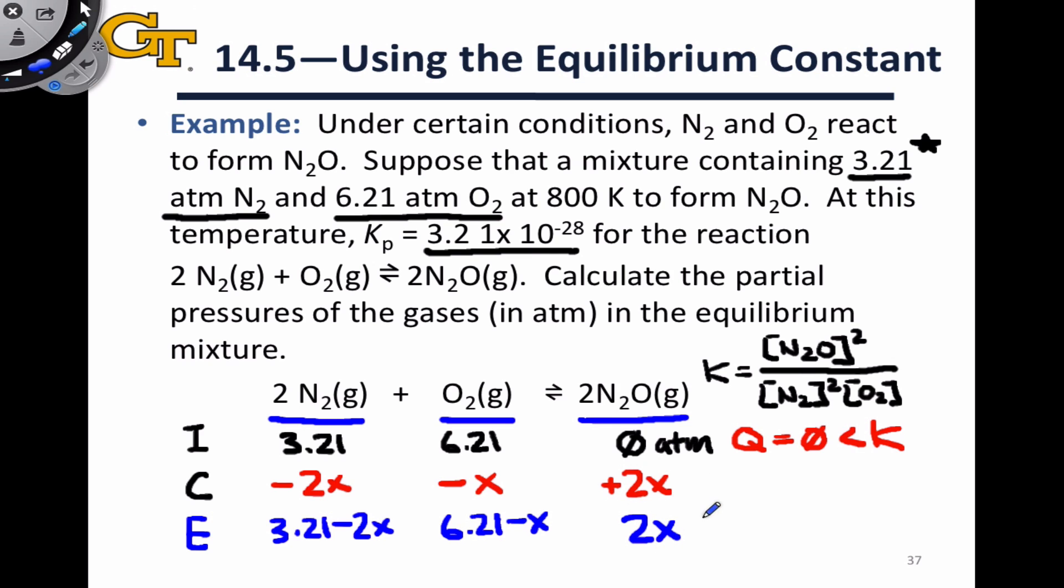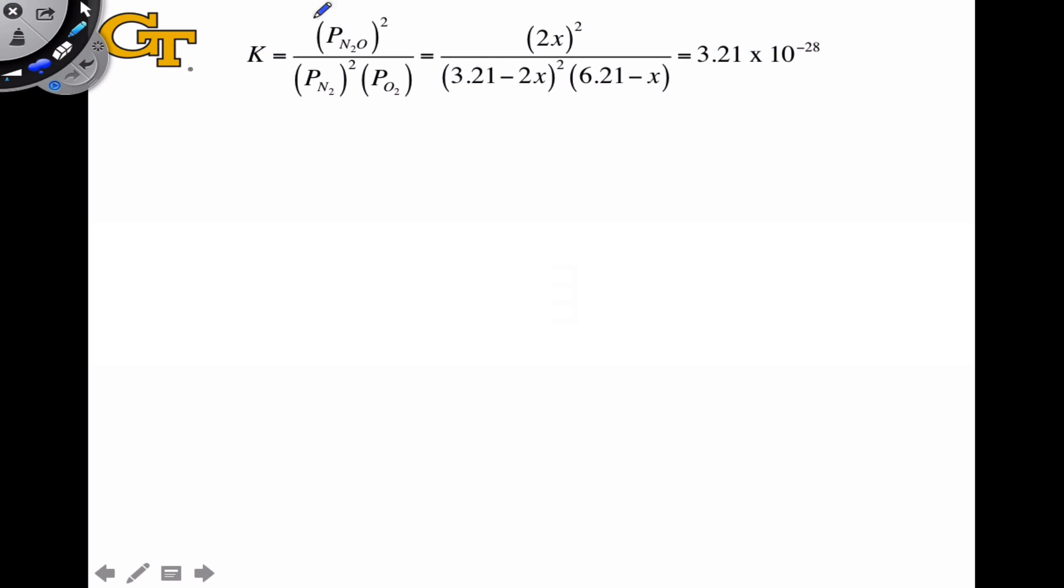We have all that we need to plug back into the equilibrium expression, and I'm going to do that on the next slide. I was a little bit sloppy on the last slide and used concentrations instead of pressures in the equilibrium expression, but we're dealing with a Kp here, so it's important to actually use the pressures. Here I've taken that equilibrium line and plugged in those equilibrium concentrations in terms of x, so I've got 2x quantity squared since the pressure of N₂O is squared, 3.21 minus 2x squared, and 6.21 minus x, and that's all equal to this given K value, 3.21 times 10 to the negative 28.